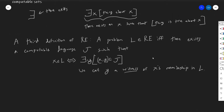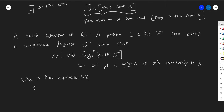So why is this equivalent? The great thing about equivalence is that if you've shown two things are equivalent already and you have a third, you only need to show equivalence between that and one of the two. Let's show why this is equivalent to the definition in terms of an accepting language. Suppose we have a machine M which accepts the problem L — a machine that accepts L in the original sense.